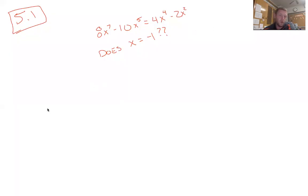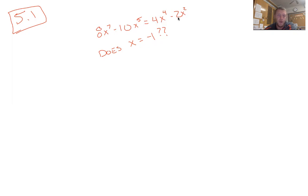We're going to start section 5.1, and it deals with polynomial equations. Polynomial equations are anything that has a higher power of 2. It works the same way as everything we've been doing — we're trying to solve for x, and there are going to be a lot more solutions. The first question asks: does x equal negative 1? All you have to do is plug it in and see if it works.